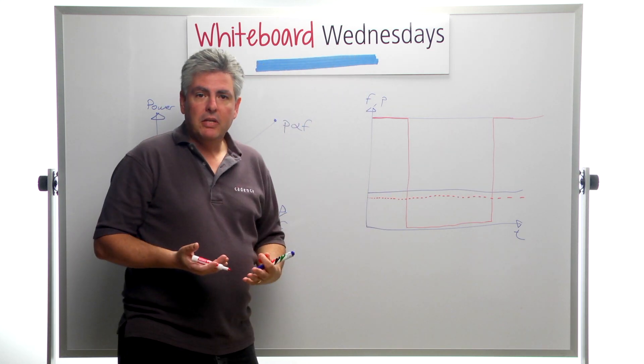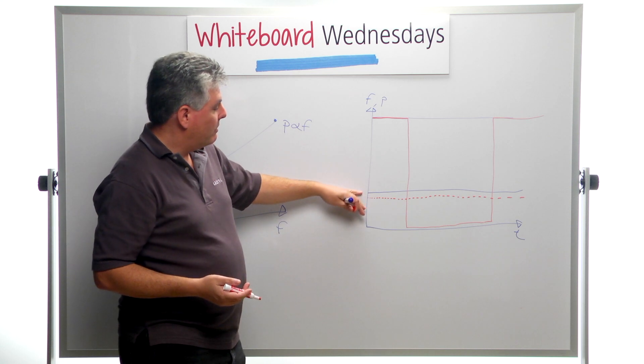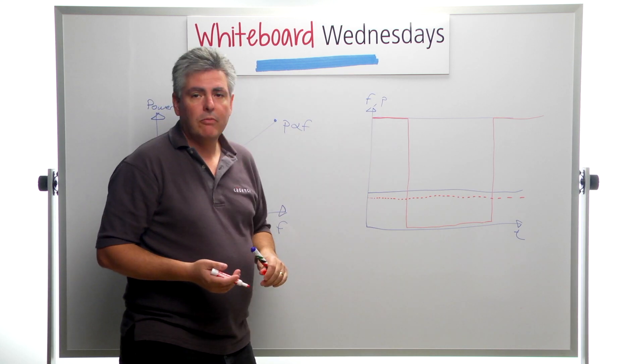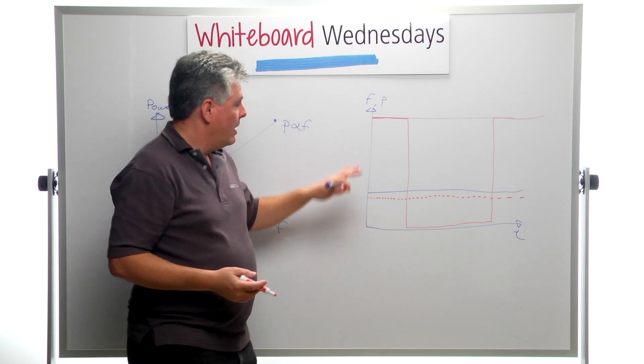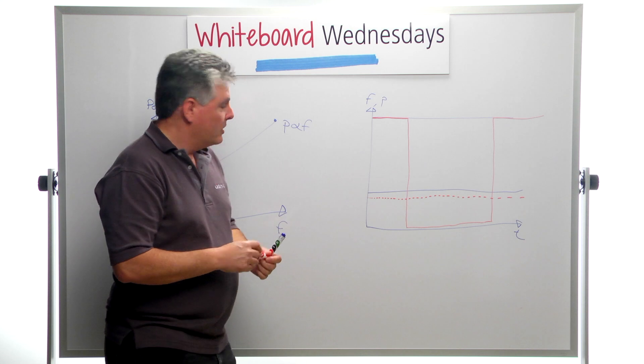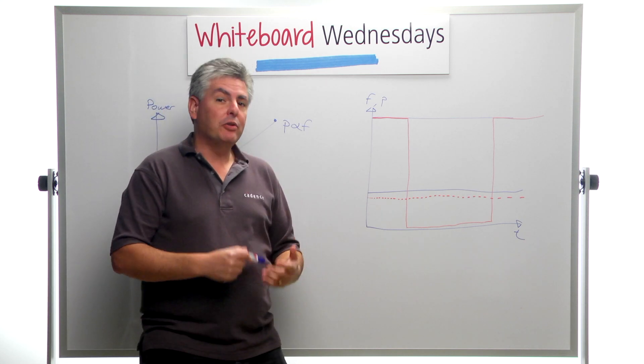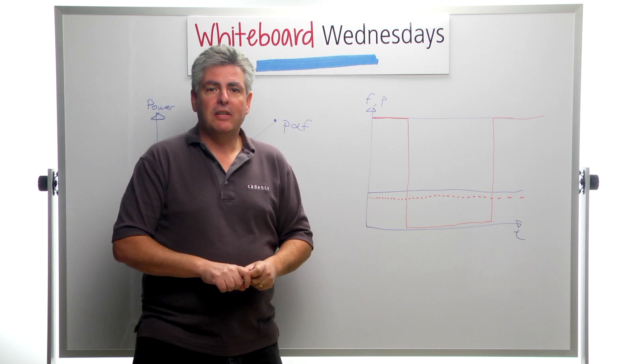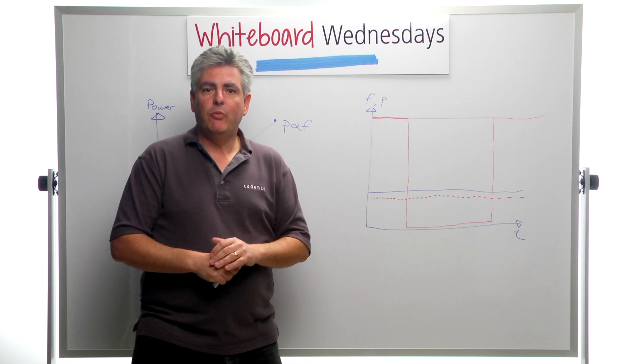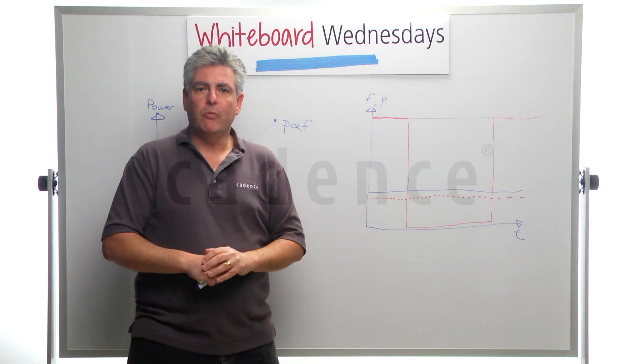So something that needs to be considered. Don't automatically assume that you should reduce frequency to reduce power in your DRAM. Consider the run, stop, run, stop mode. Analyze both cases. See which one works out better for you. I hope I've been able to explain today why you shouldn't always assume that you should reduce frequency in DRAM devices to reduce power. And we hope that you'll join us again for another Whiteboard Wednesday. We'll see you next time.